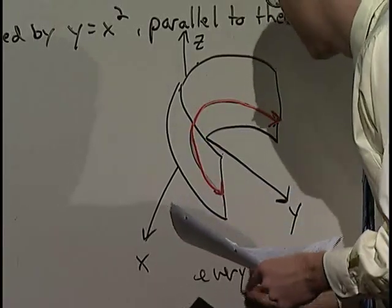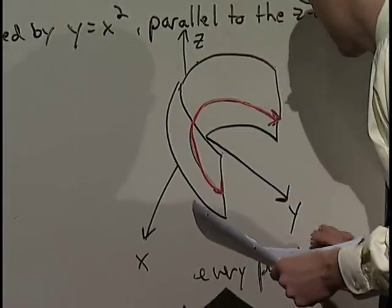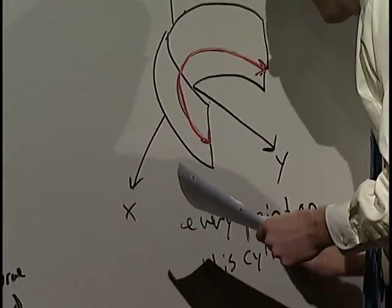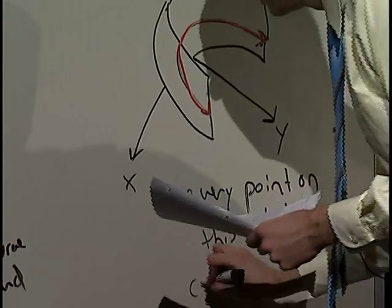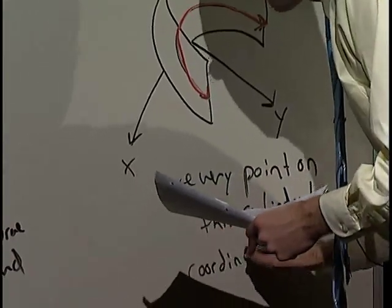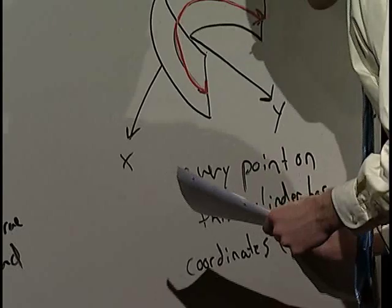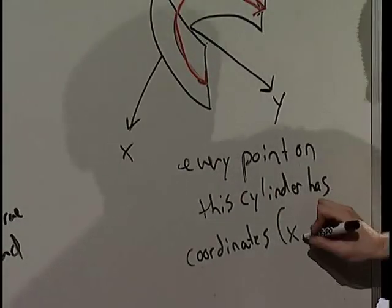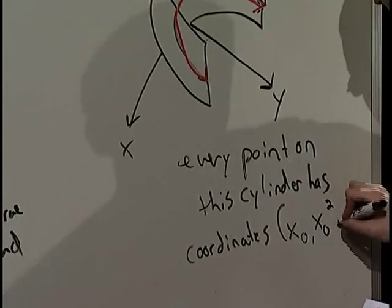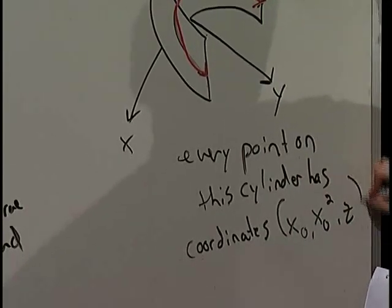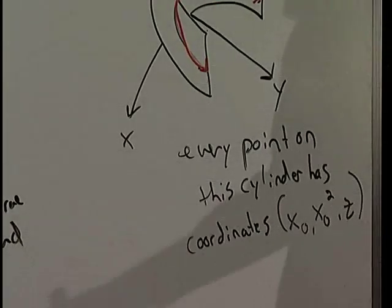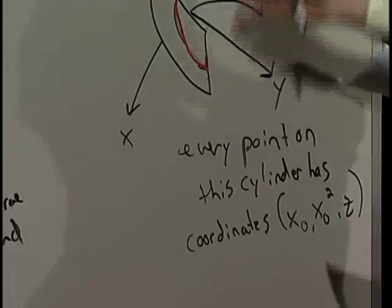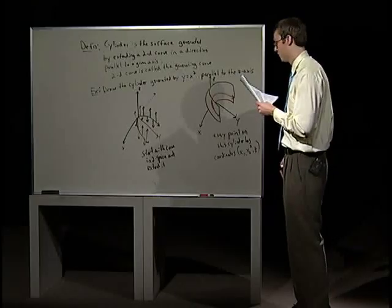Every point on this cylinder has coordinates: it's got an x value, its y value is x squared (so this is x₀), and z is whatever it is — the z value is allowed to range freely. This thing will extend up and down the z-axis infinitely far forever.